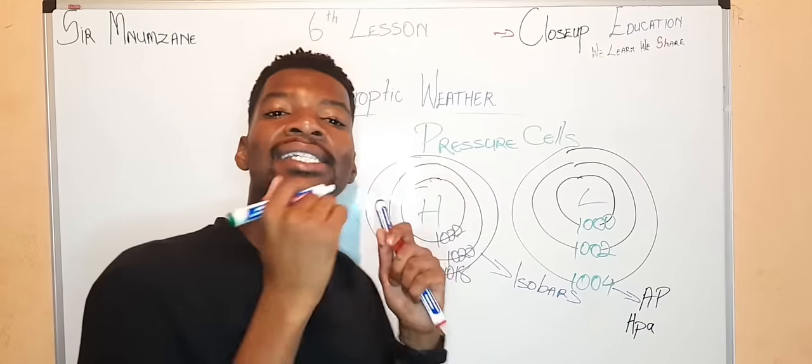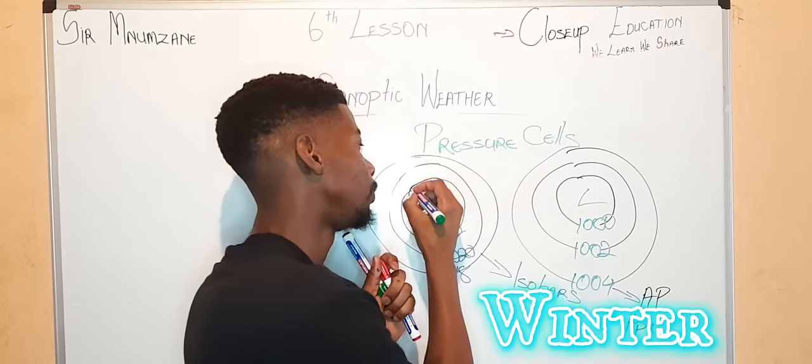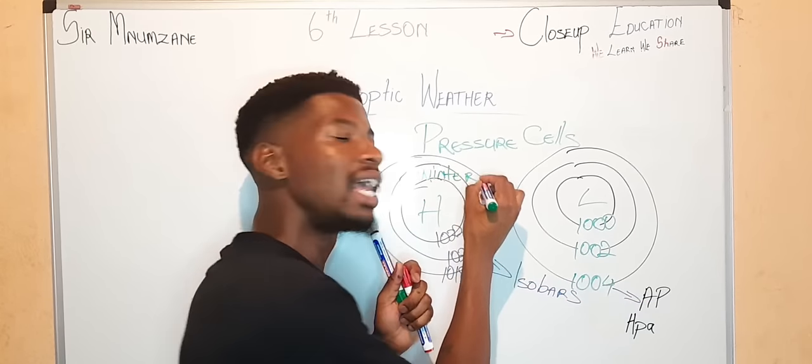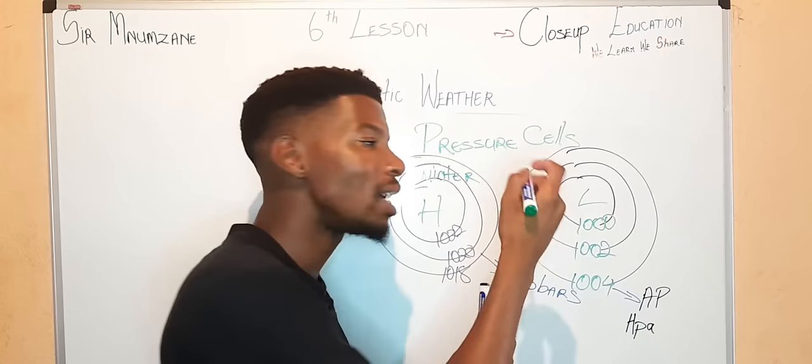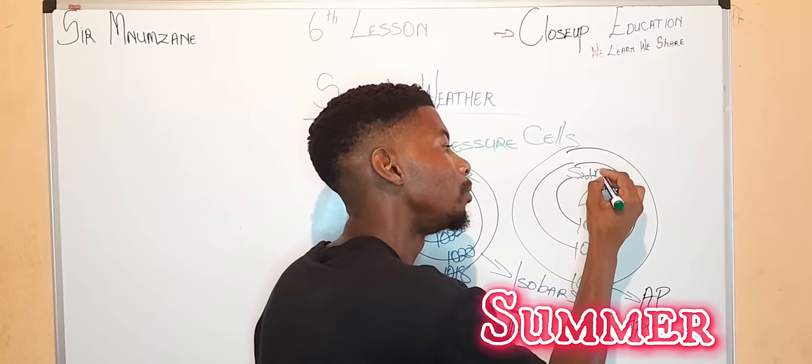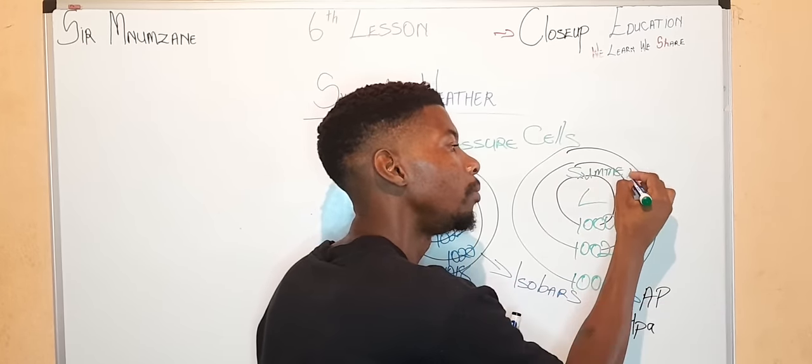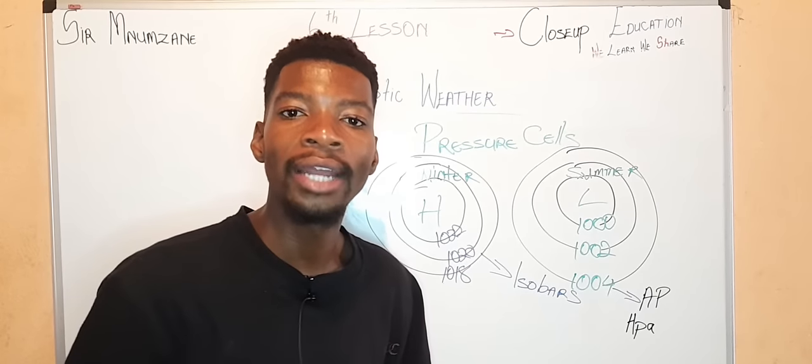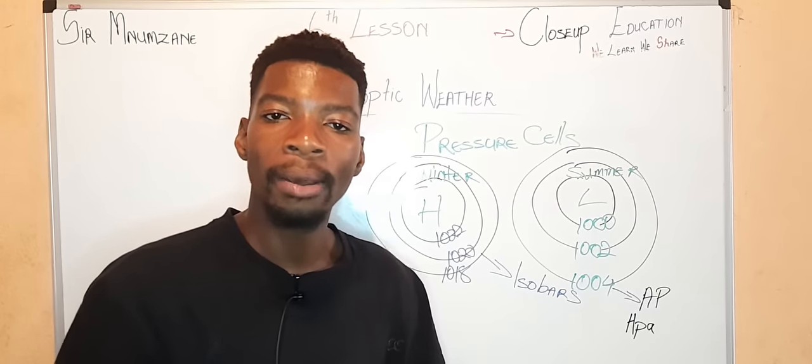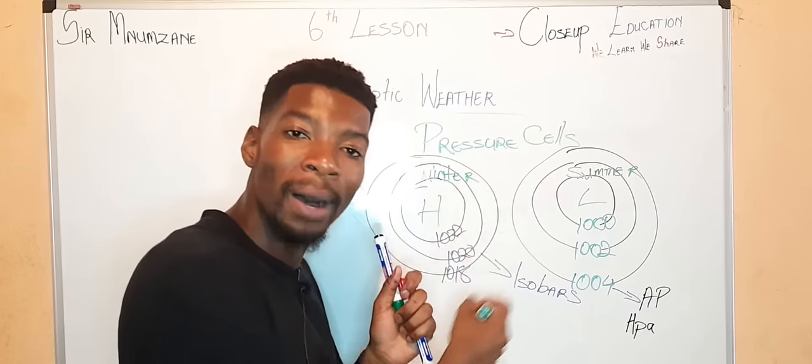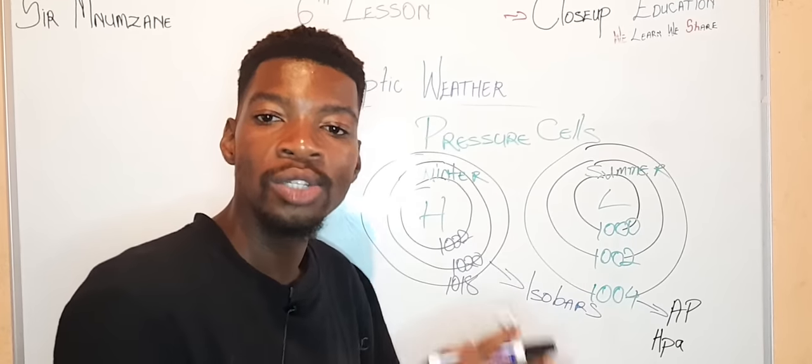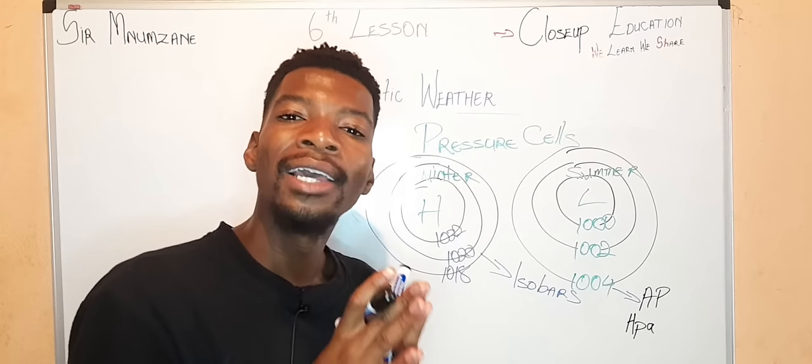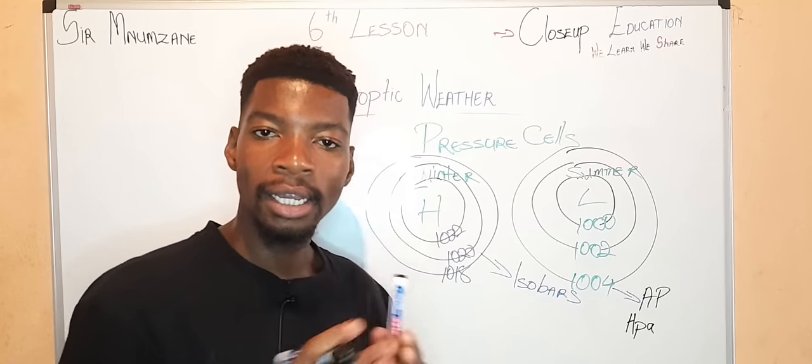We know that high pressure is associated with winter. Therefore, meaning low pressure has to be associated with summer. So now we understand these are the pressure cells you will find on your synoptic weather map. They have isopars which are lines that join places of equal atmospheric pressure, which are measured using hectare pascars.